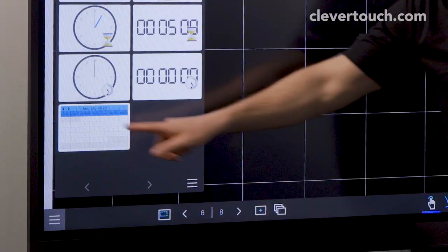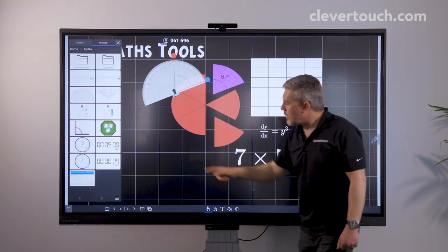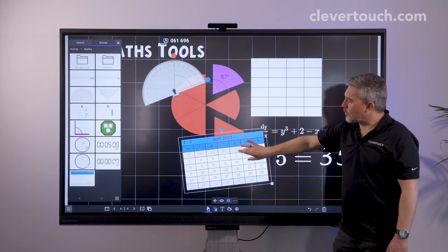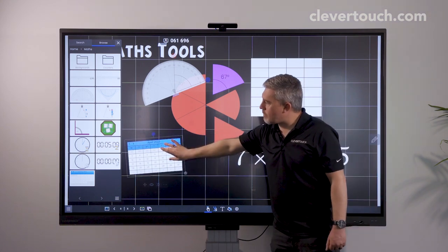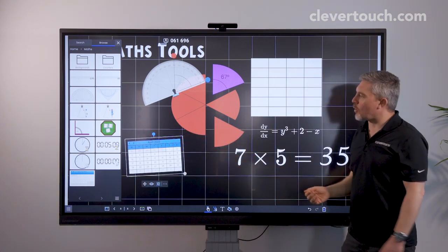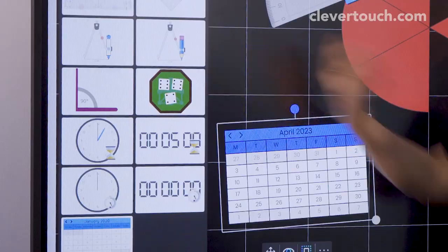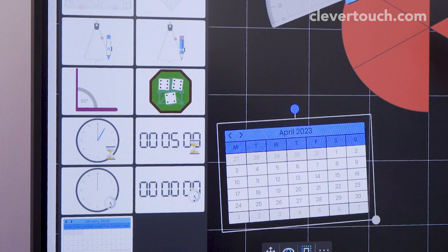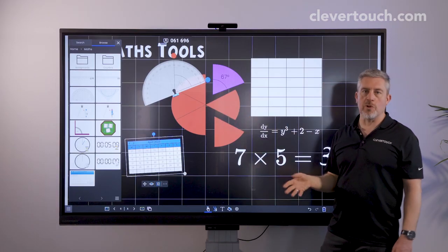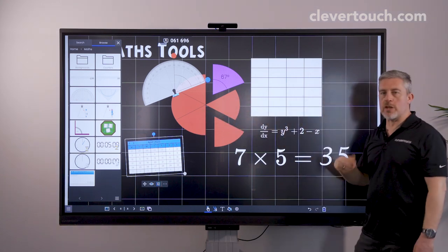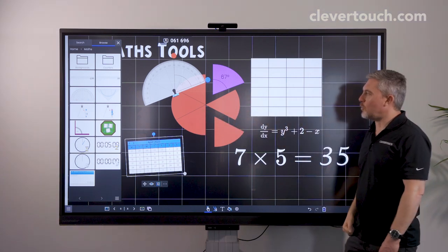We also have things like interactive calendars and sort of just shrink that down and pop that over there really easily. Lots of interactive clocks. We've got dice that you can bring out for probability and compasses and so on and rulers. So lots of tools that you just drag out and then you can start to interact with and use.